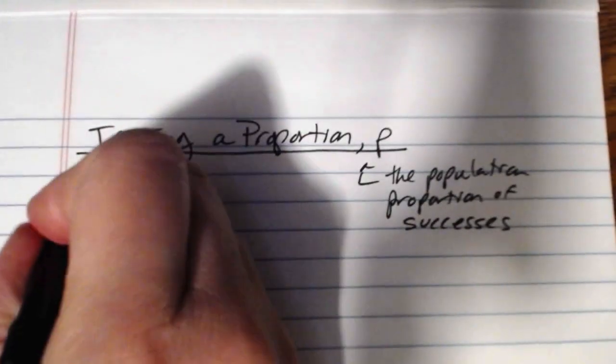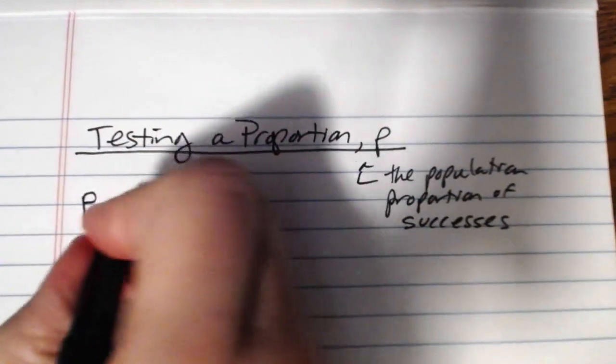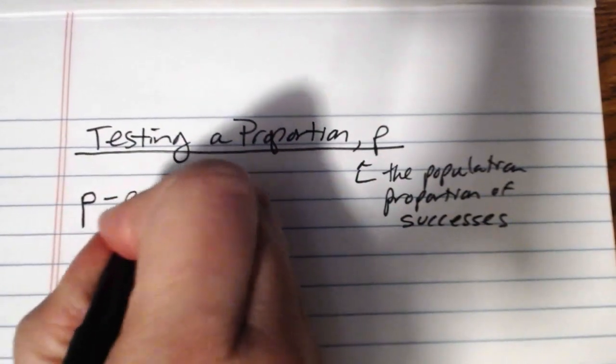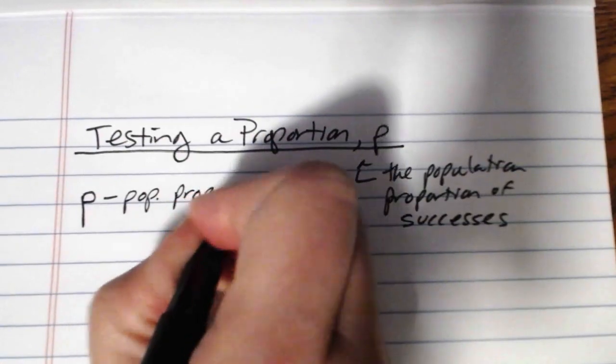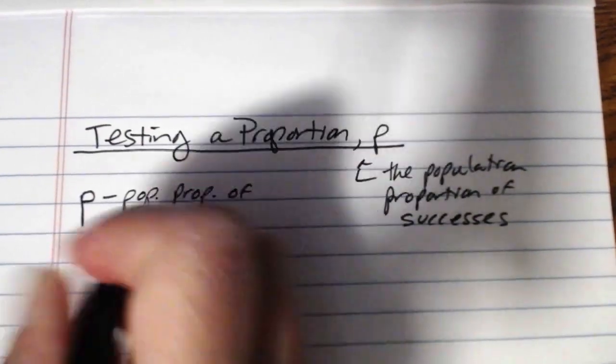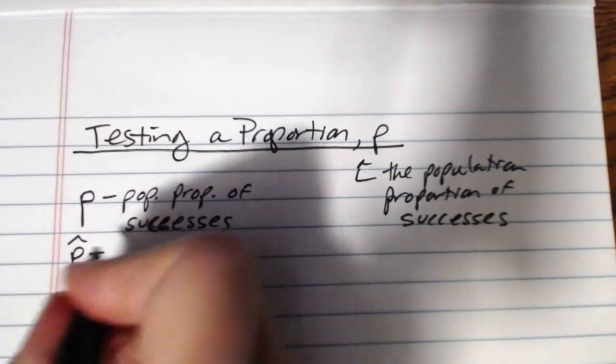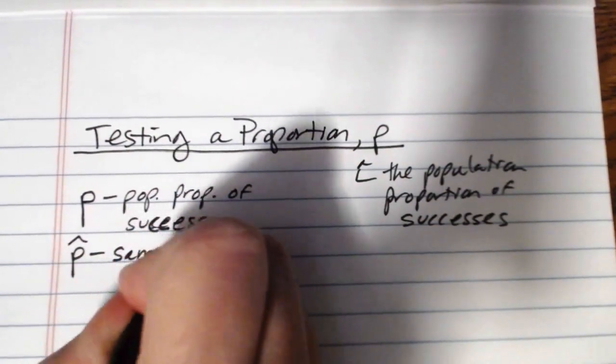In the same problem we're going to be talking about lowercase p, which is the population proportion of successes. You'll also have lowercase p hat, which is the sample proportion of successes.